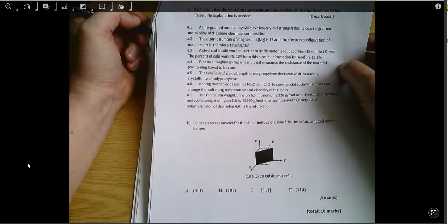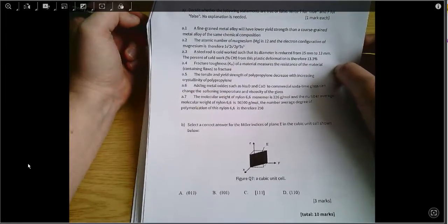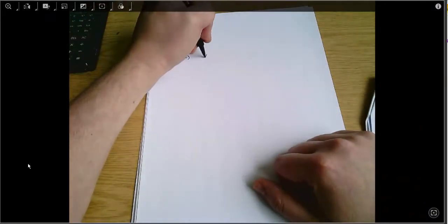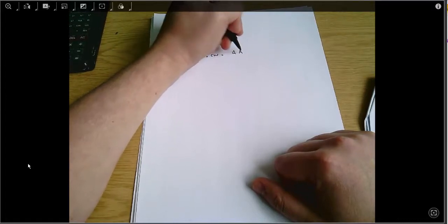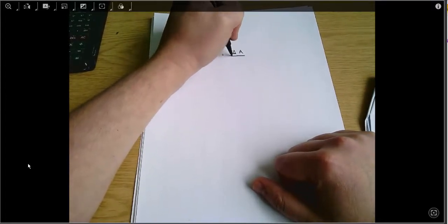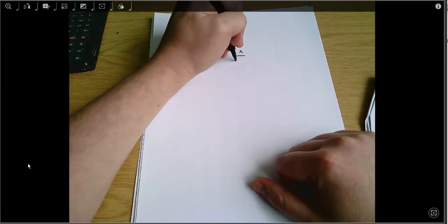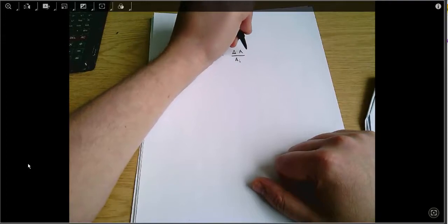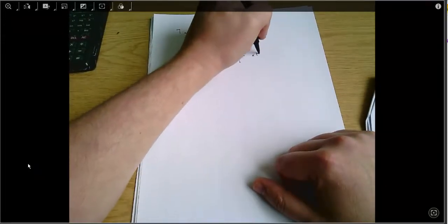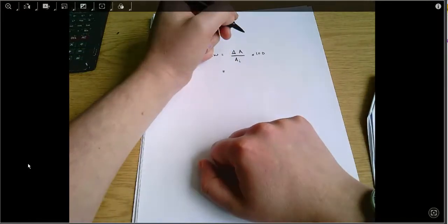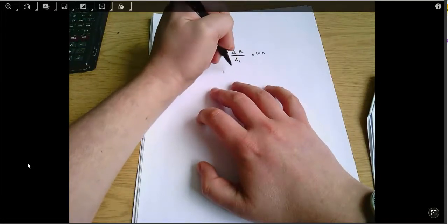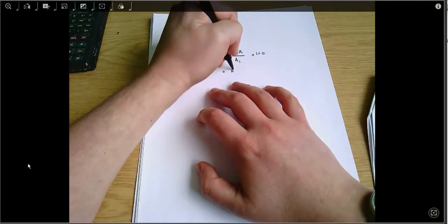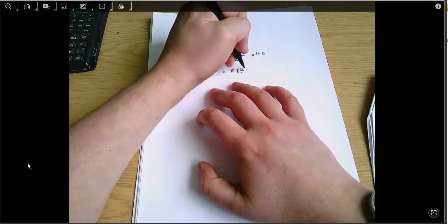For part C we're just going to need to do a bit of calculation. The thing that's important here: percentage cold work equals change in area divided by the initial area, and express that as a percentage so we can multiply that by 100. That equals, well we're told in the question the diameter has gone from 15 to 13. I'll do everything in square millimeters here.